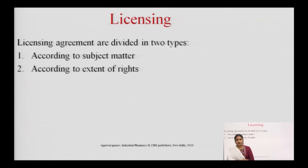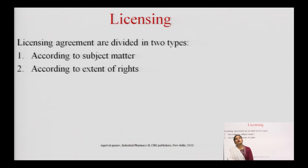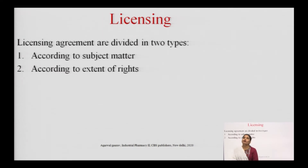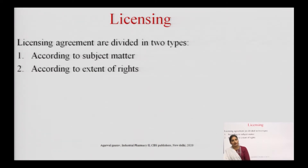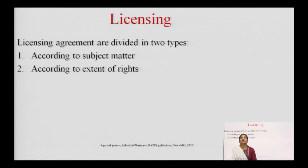Next is licensing. License agreements are divided into two types: first, according to the subject matter; second, according to the extent of rights. As stated previously, technology is transferred in the form of a license. A license is a method of technology transfer, where the technology developer grants permission to use his technology to the technology receiver in the form of a document called a license.